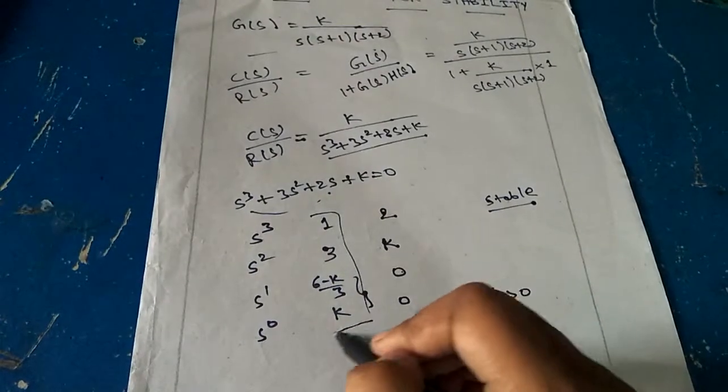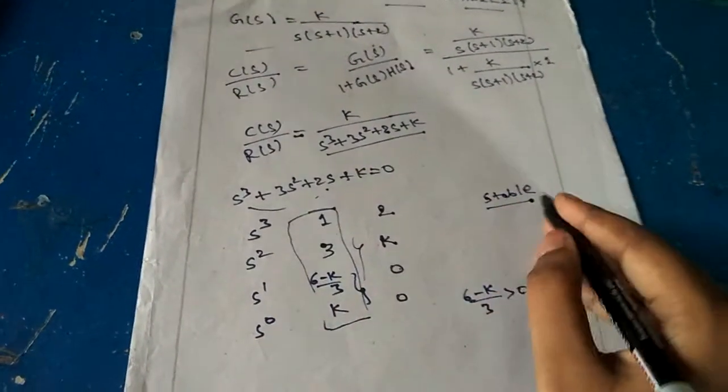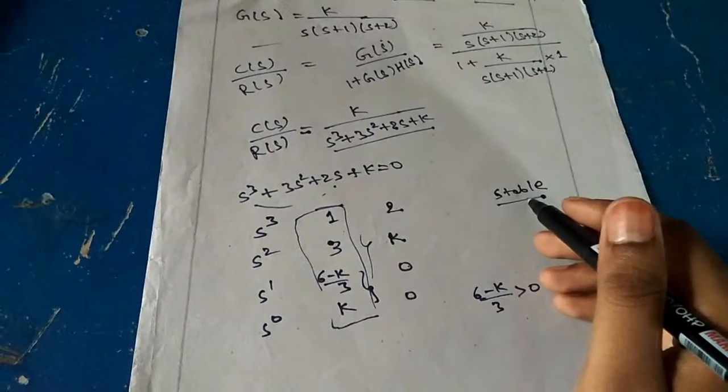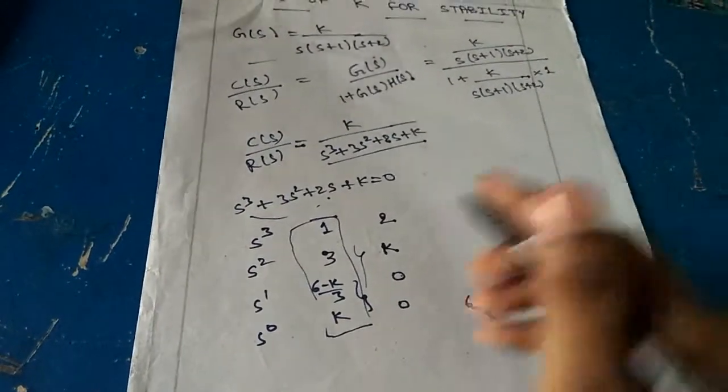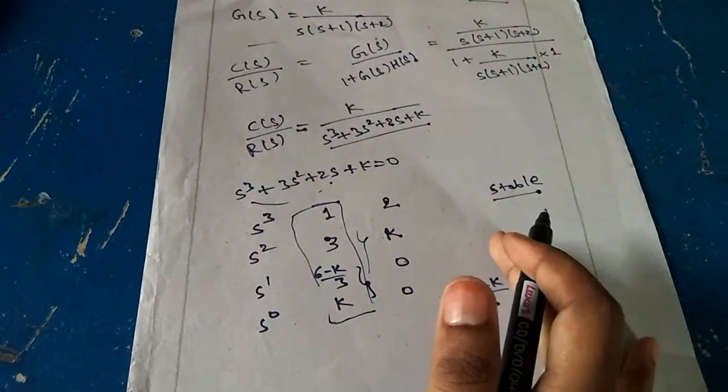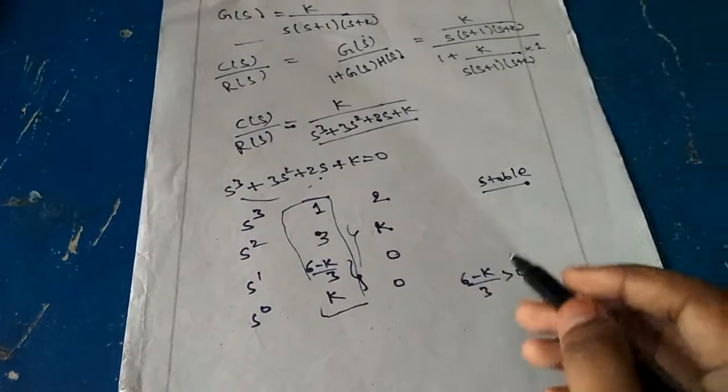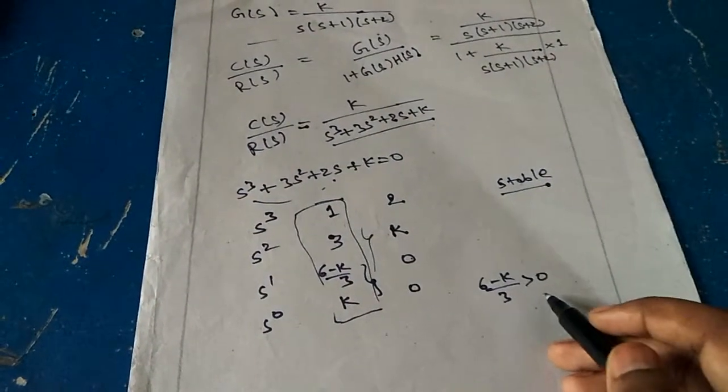According to our RH criteria condition number 1, when in the first column all the signs are the same, then the system is said to be stable—all the signs are positive. If we take (6-k)/3 less than 0, then we get a sign change and the system becomes unstable. So (6-k)/3 should be greater than 0.